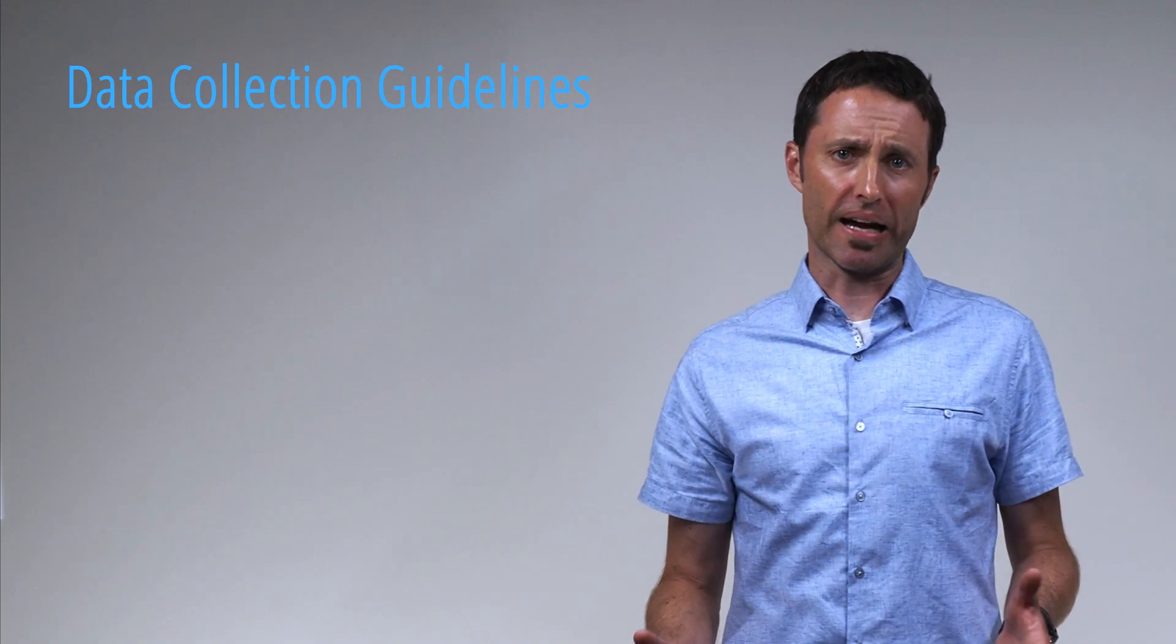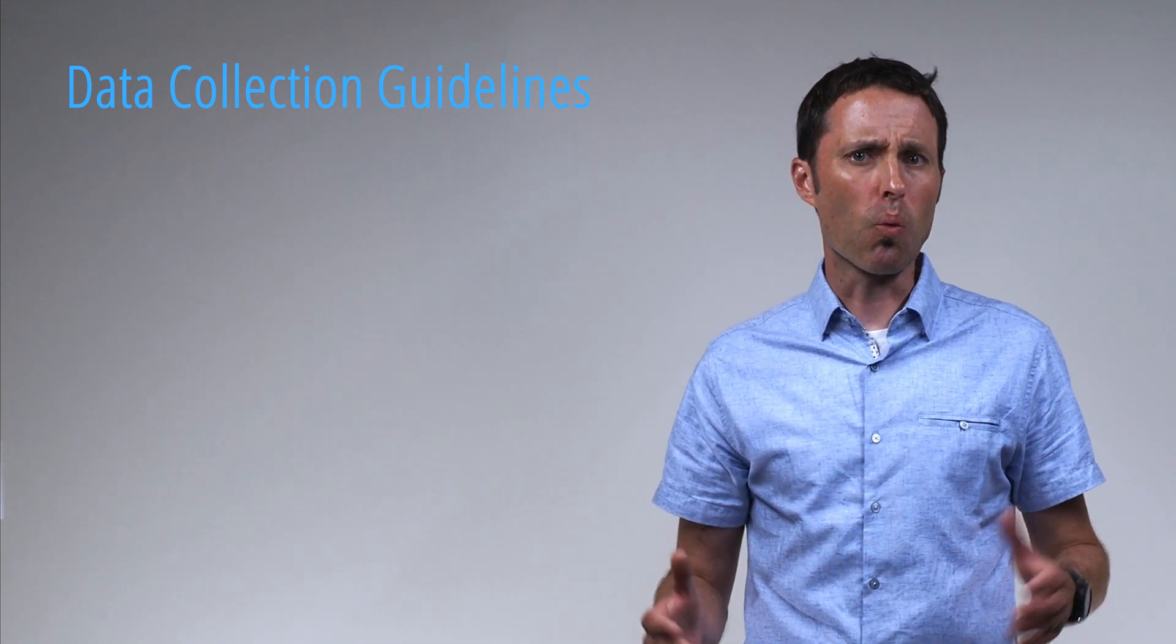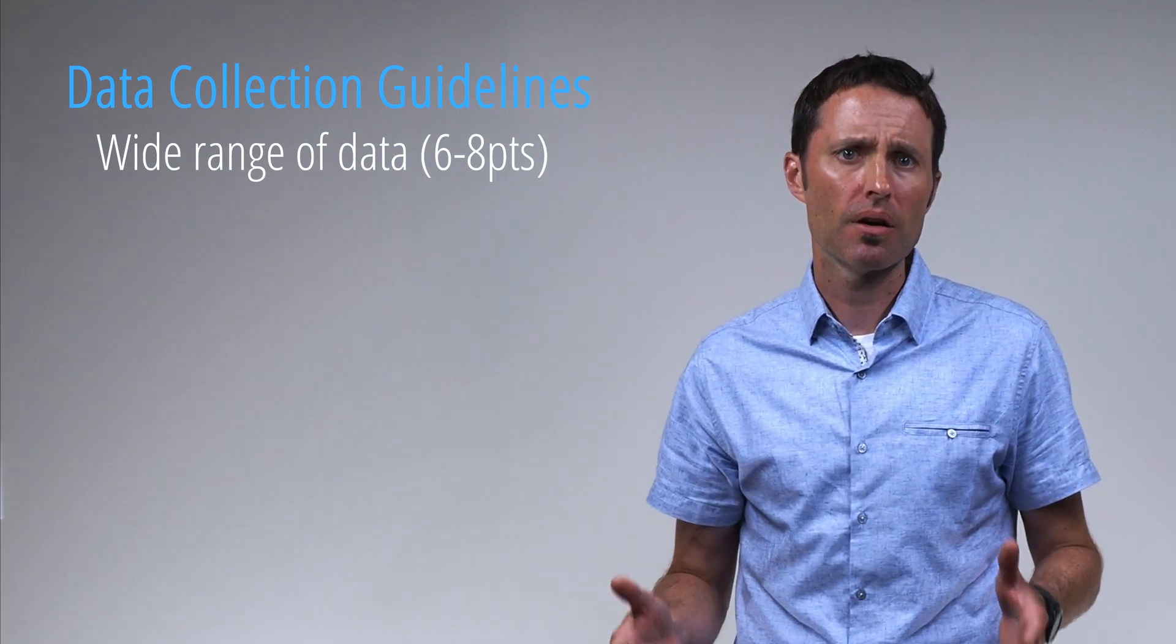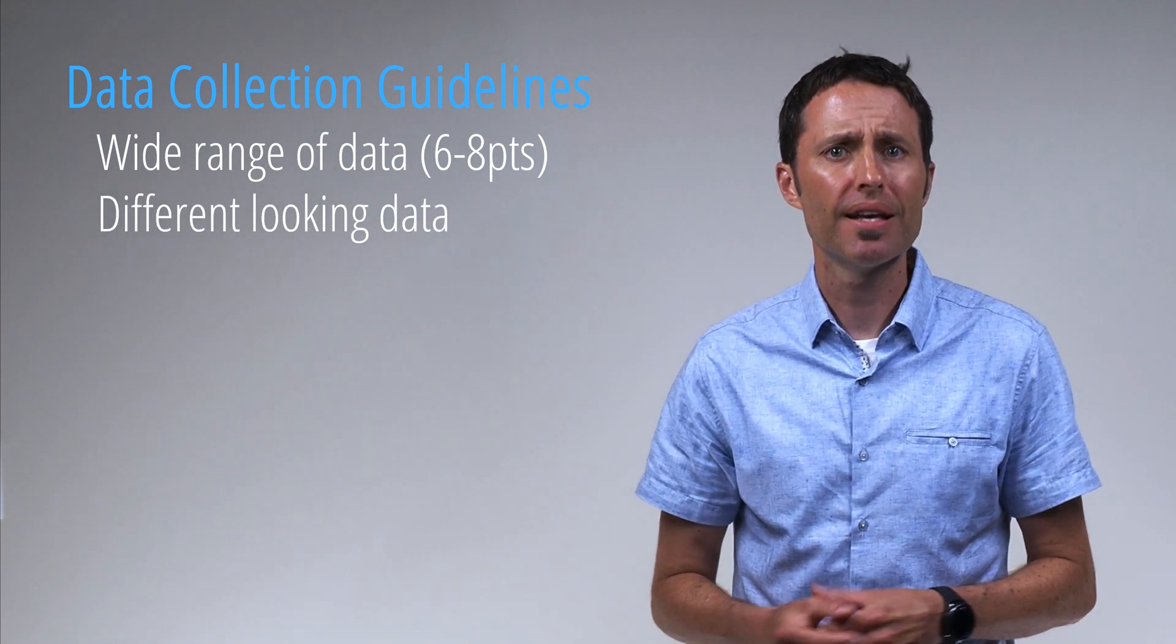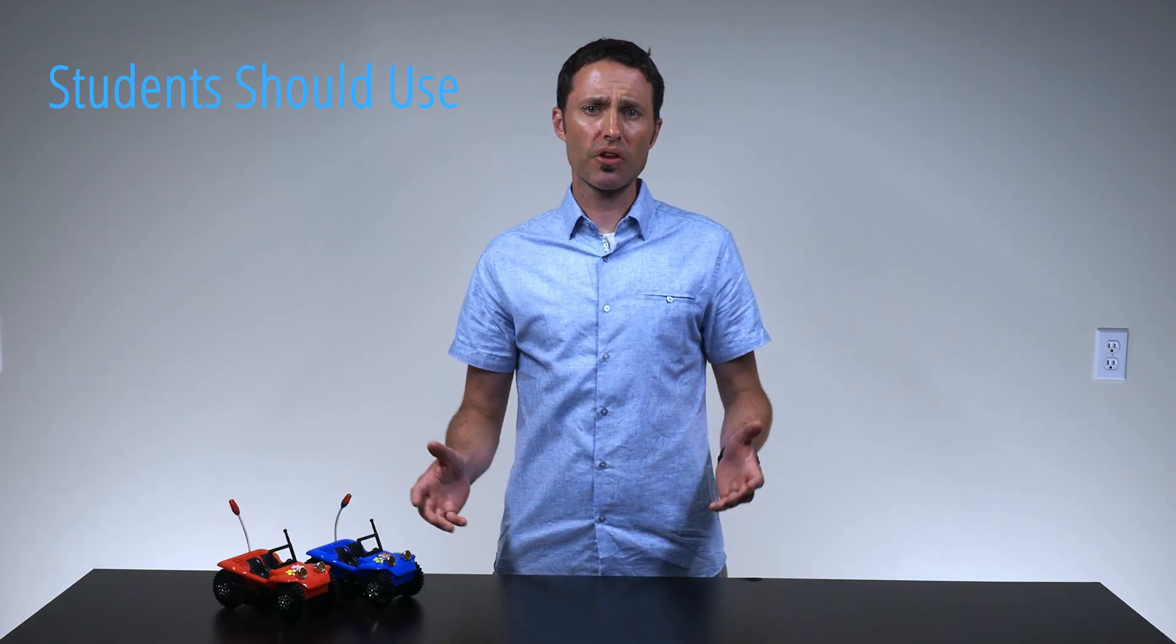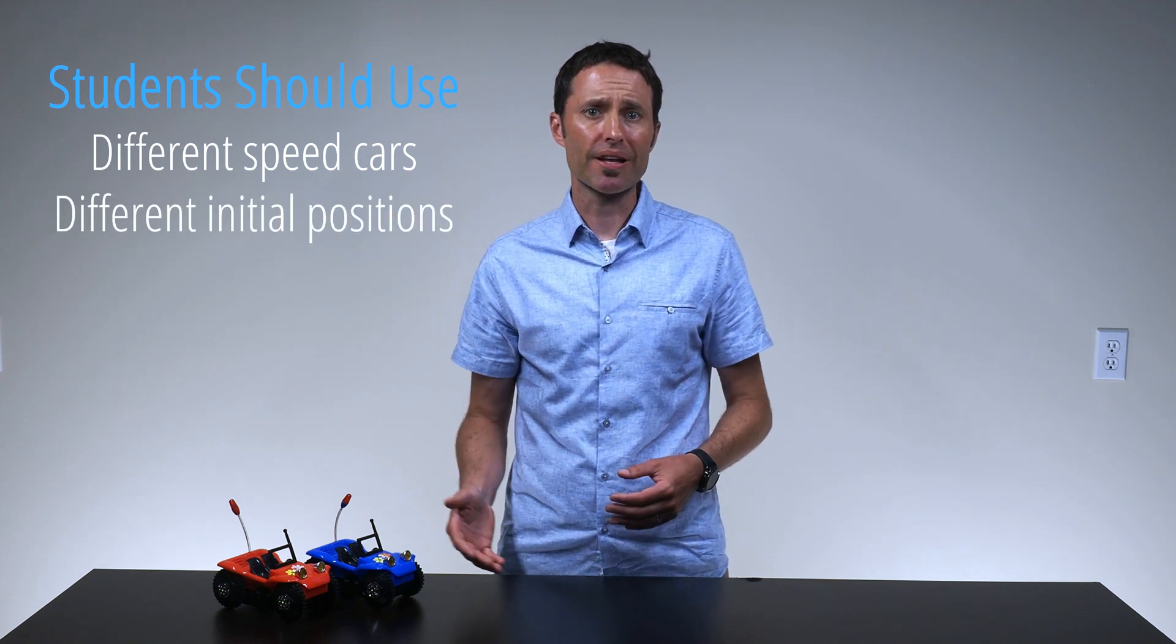A few basic guidelines when determining the type of relationship between two variables is to get a wide range of at least six to eight different values for each variable. Also, during the conclusion discussion, it's beneficial for lab groups to have different looking data. For this lab, have students use different speed cars, start at different initial positions, and move in different directions.